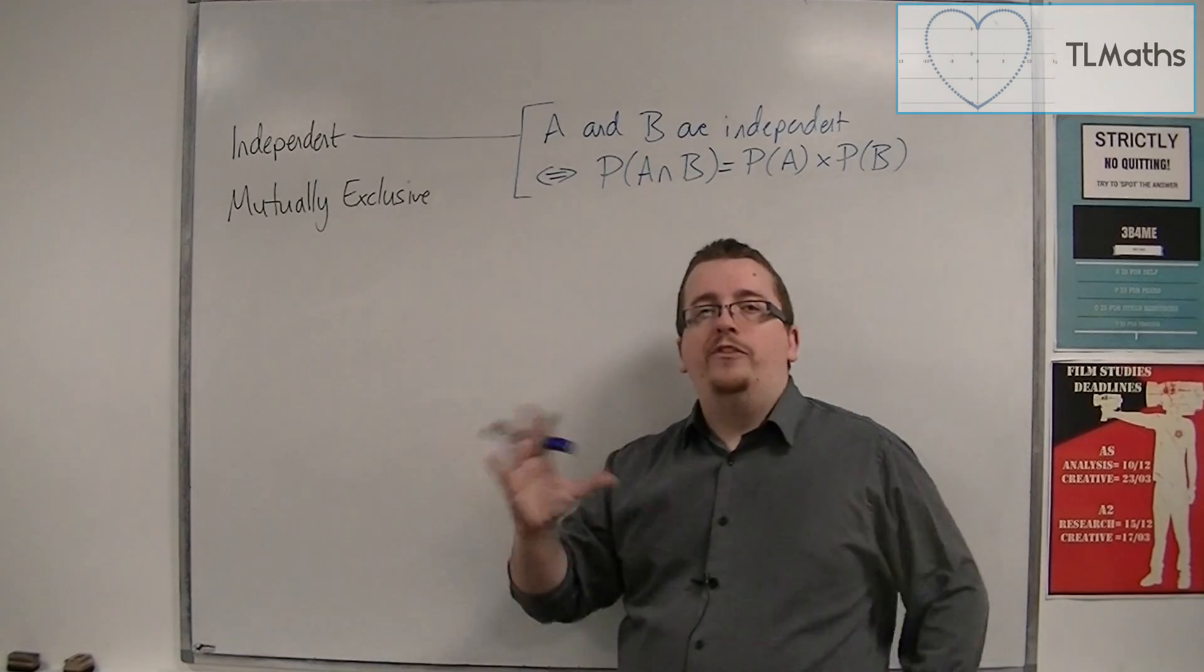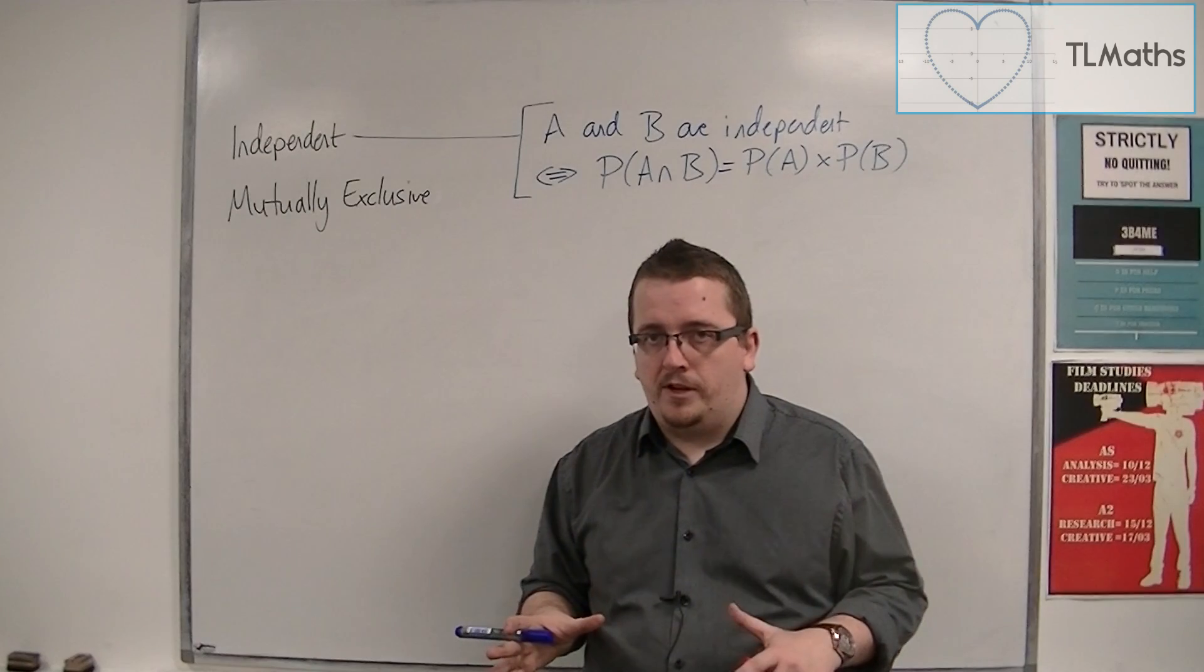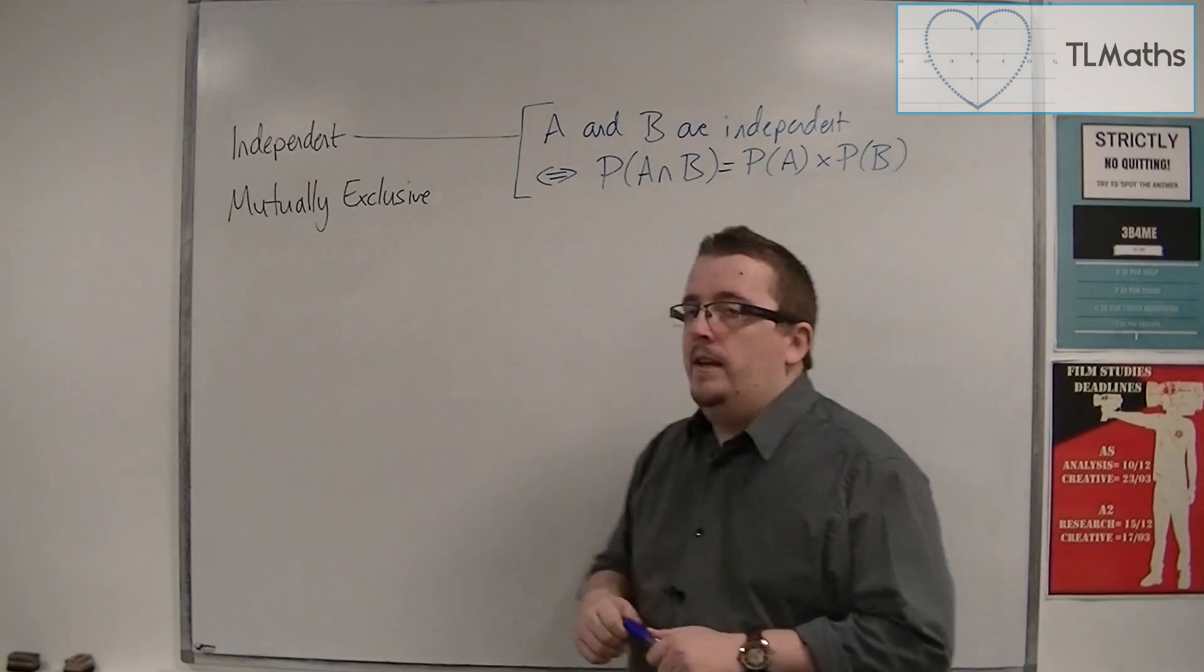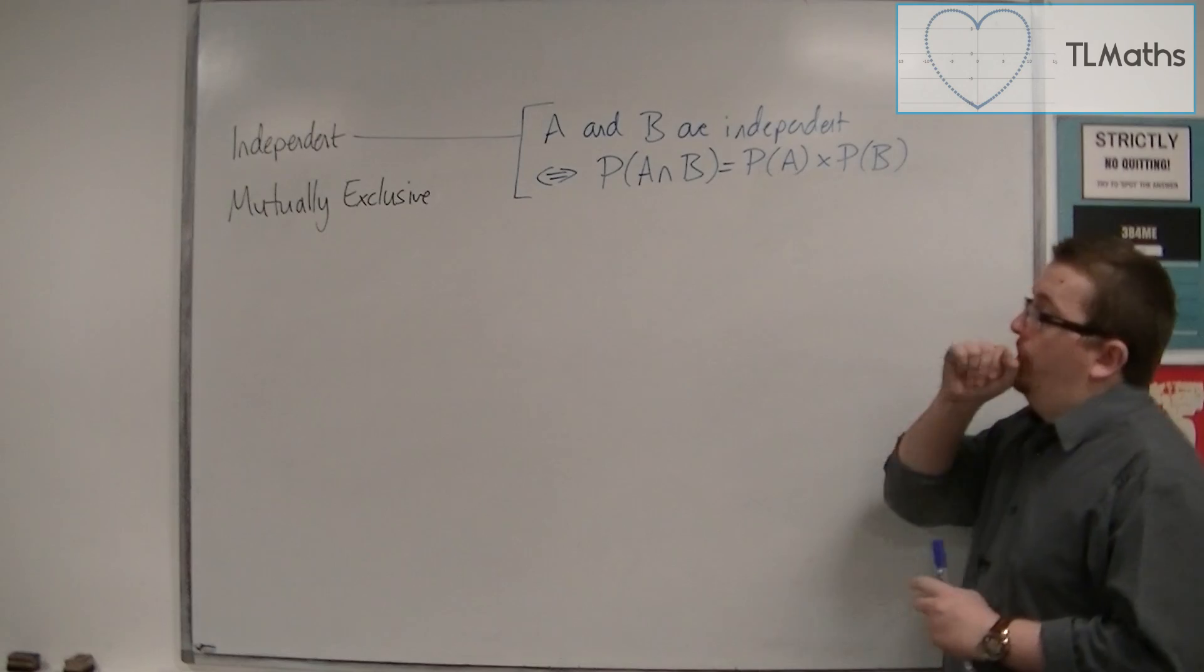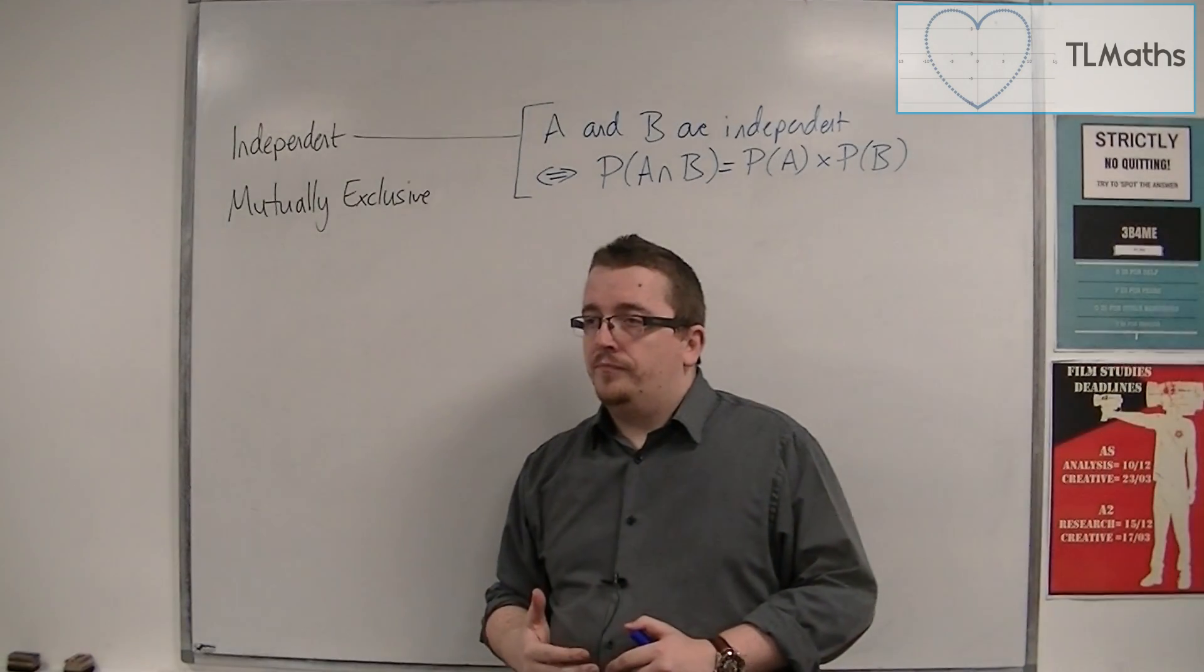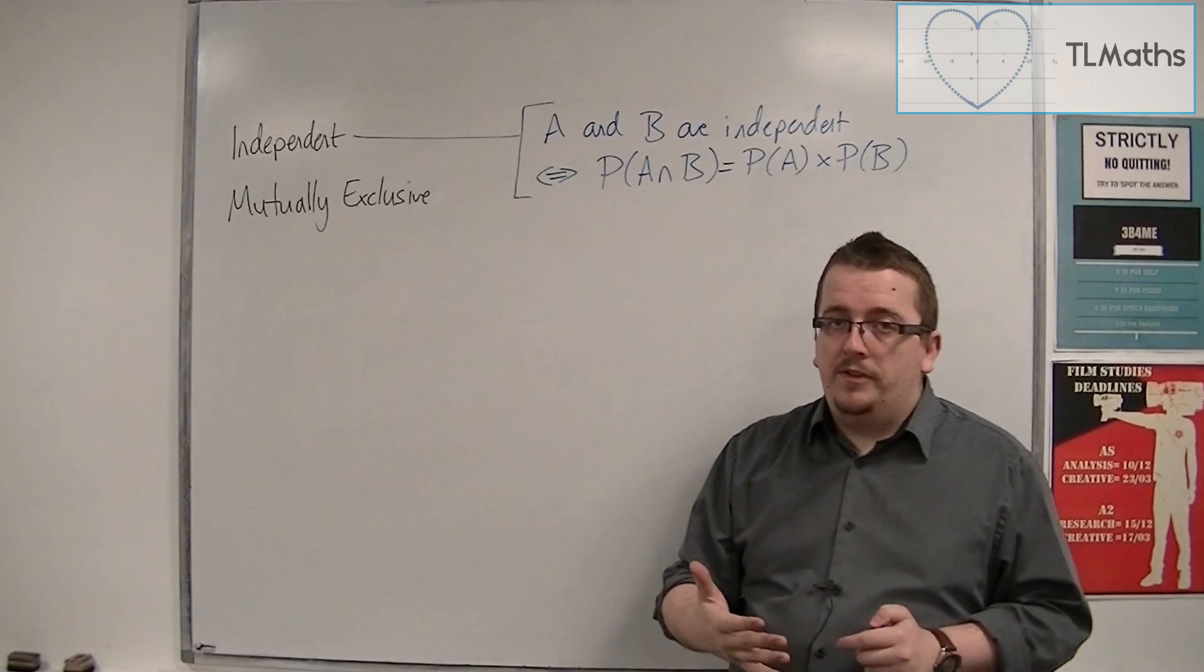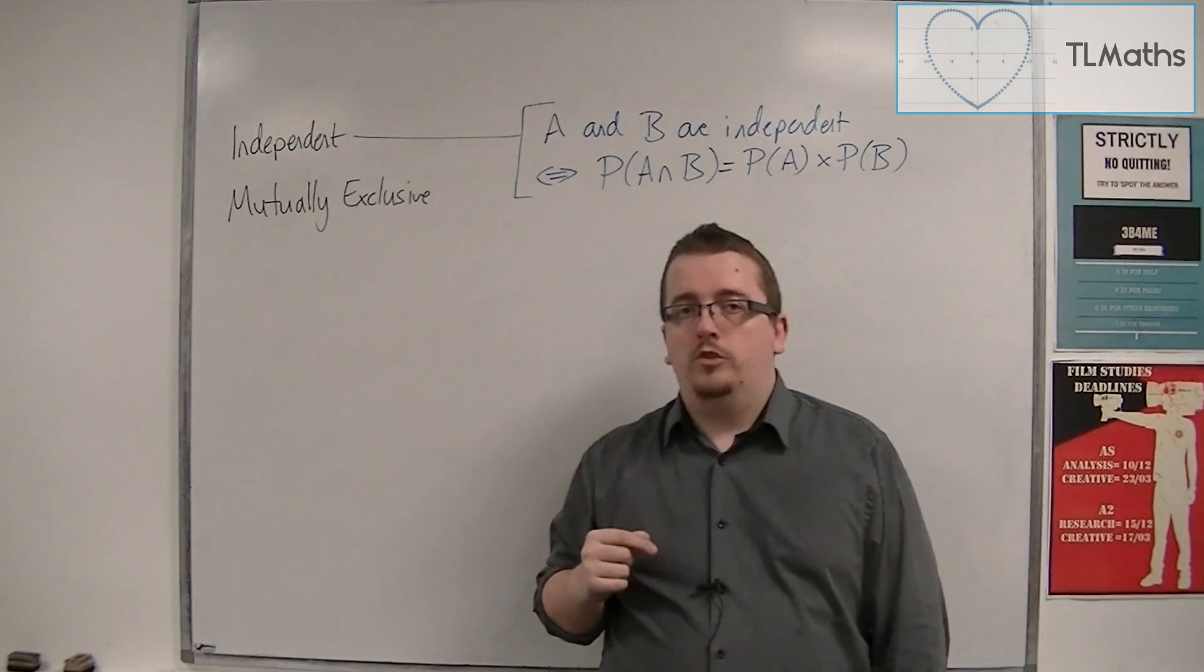With independence, one does not affect the other. But with mutually exclusive, they cannot happen at the same time. So, for example, let's say another game at the casino is that I win £1,000 if I draw both a club and a diamond from a pack of cards with one try.